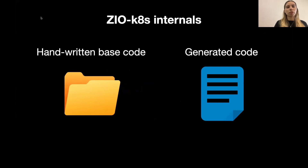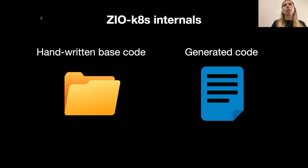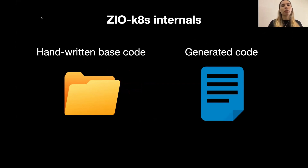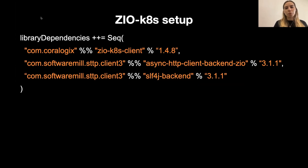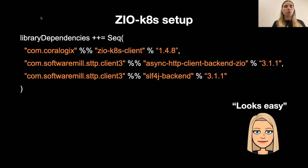Talking about the internals of the library, there are two parts: hand-written base code — the typical one with tests and creation of custom resources — and generated code. The library connects to the Kubernetes API and allows auto-generating creation of objects. For example, if you have a pod with parameters like metadata and specifications, the name of the pod and all that can be auto-generated from the Kubernetes API, meaning there's no need for additional boilerplate code. The setup looked quite easy — just setting up a few dependencies like the Zio Kubernetes client and the STTP client, since the library relies on STTP.